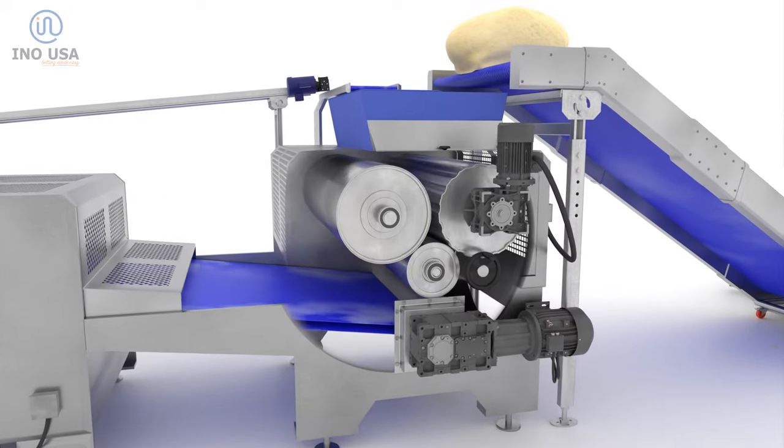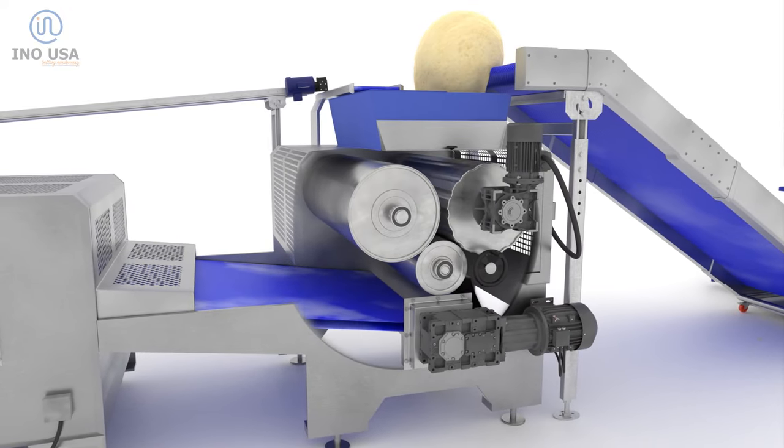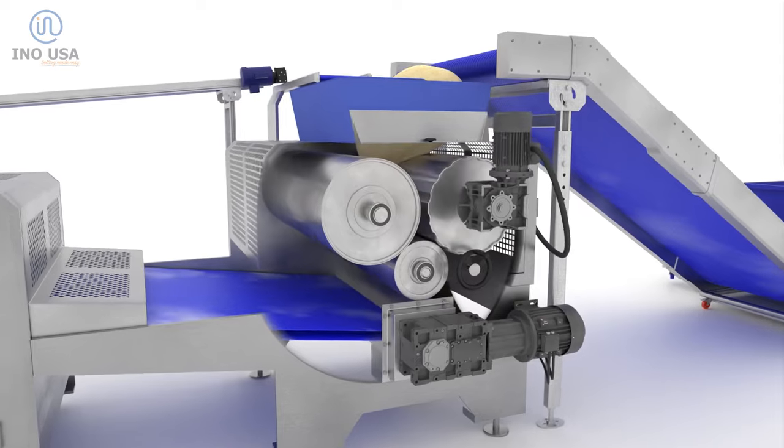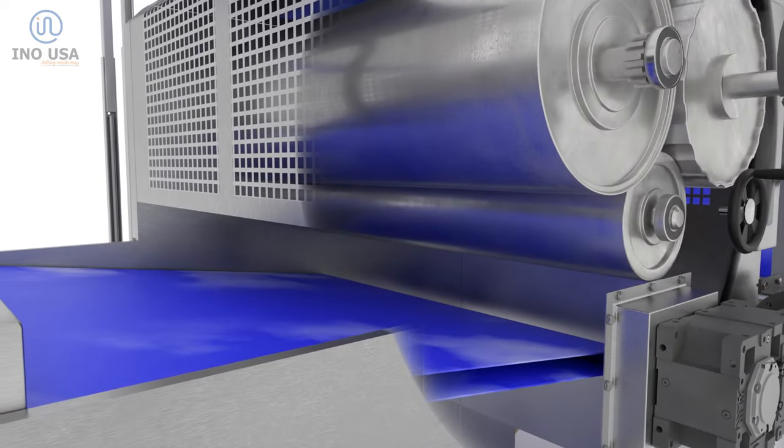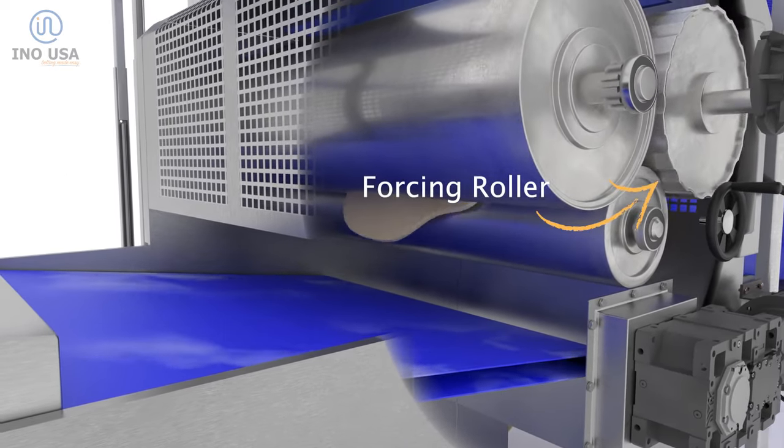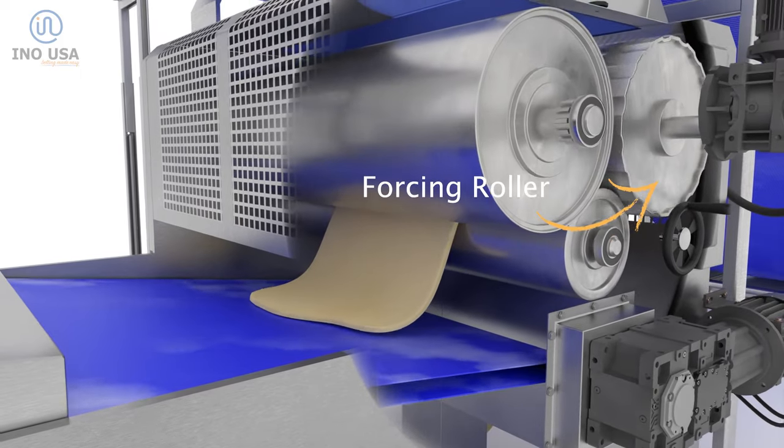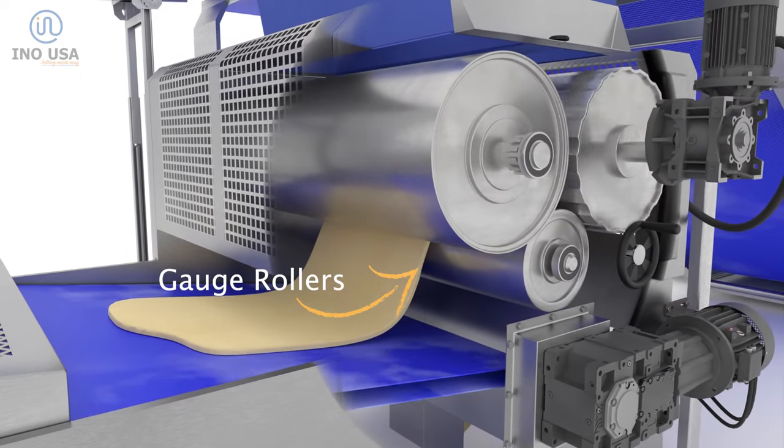As the dough enters the hopper on the sheeter, it passes through a system of rollers to produce a consistent dough sheet. A forcing roller draws the dough into a pressurized cavity between 2-gauge rollers, where it gets compacted into a uniform and homogeneous sheet of the desired thickness.